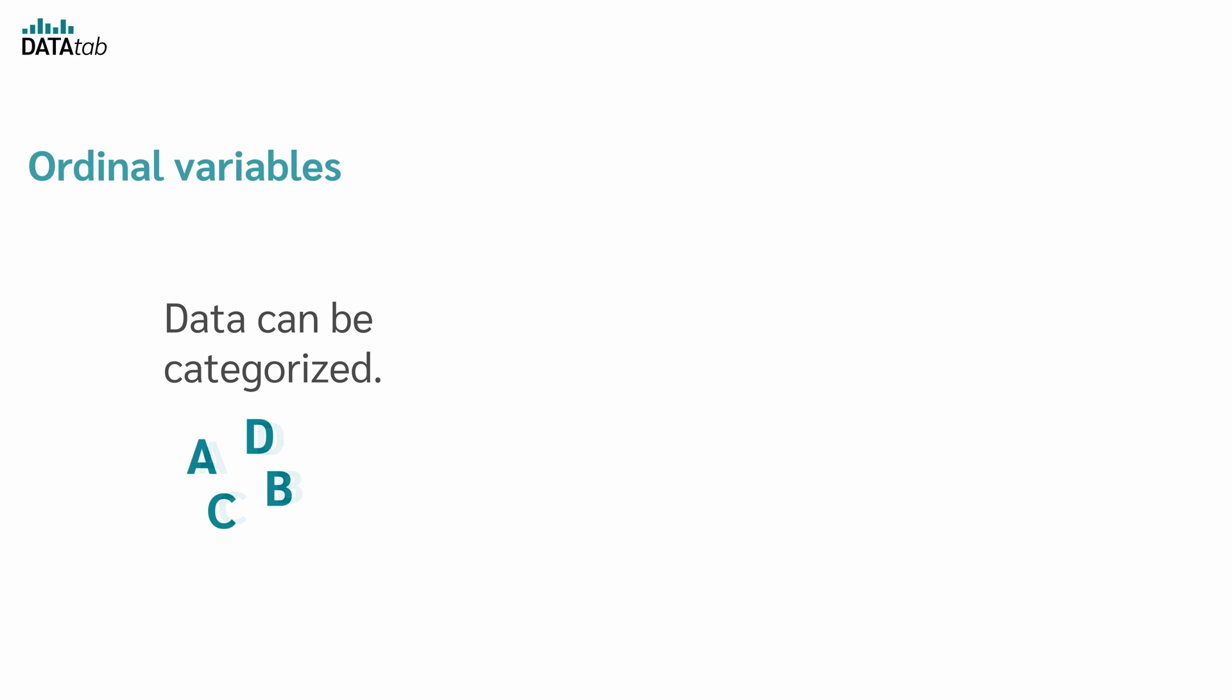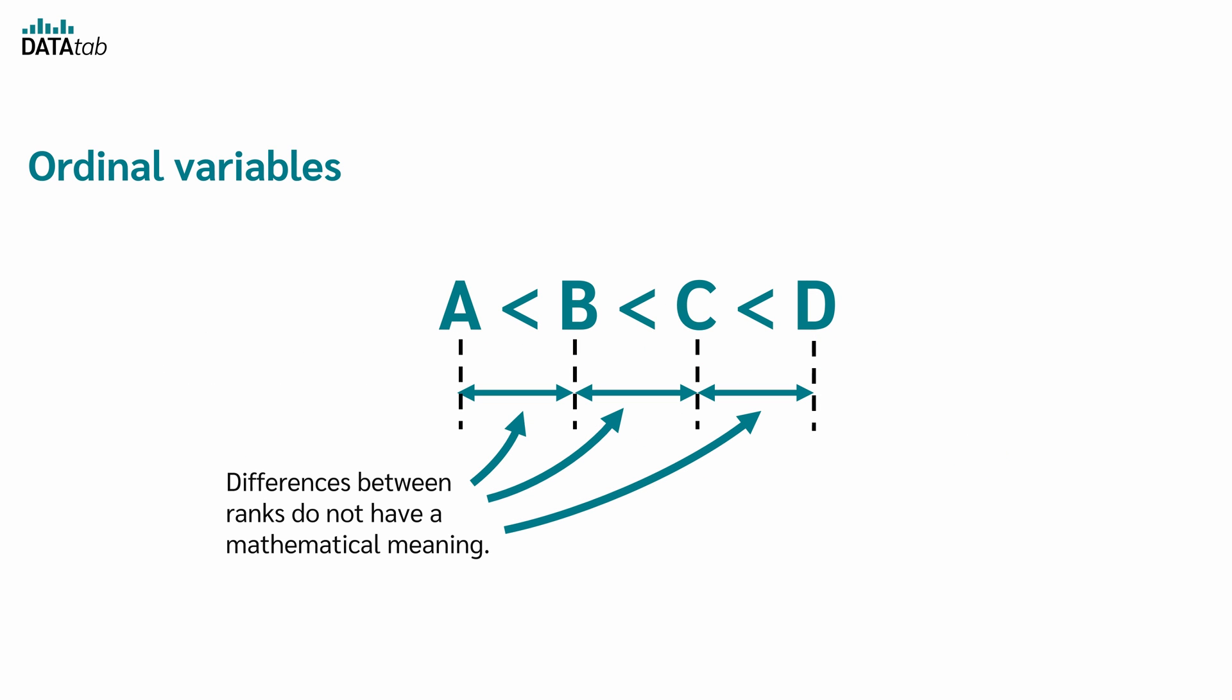But what about the Ordinal level of measurement? Ordinal data can be categorized, and in comparison with nominal data, it is possible to have a meaningful ranking of the categories. But differences between ranks do not have a mathematical meaning. This means the intervals between the data points are not necessarily equal.